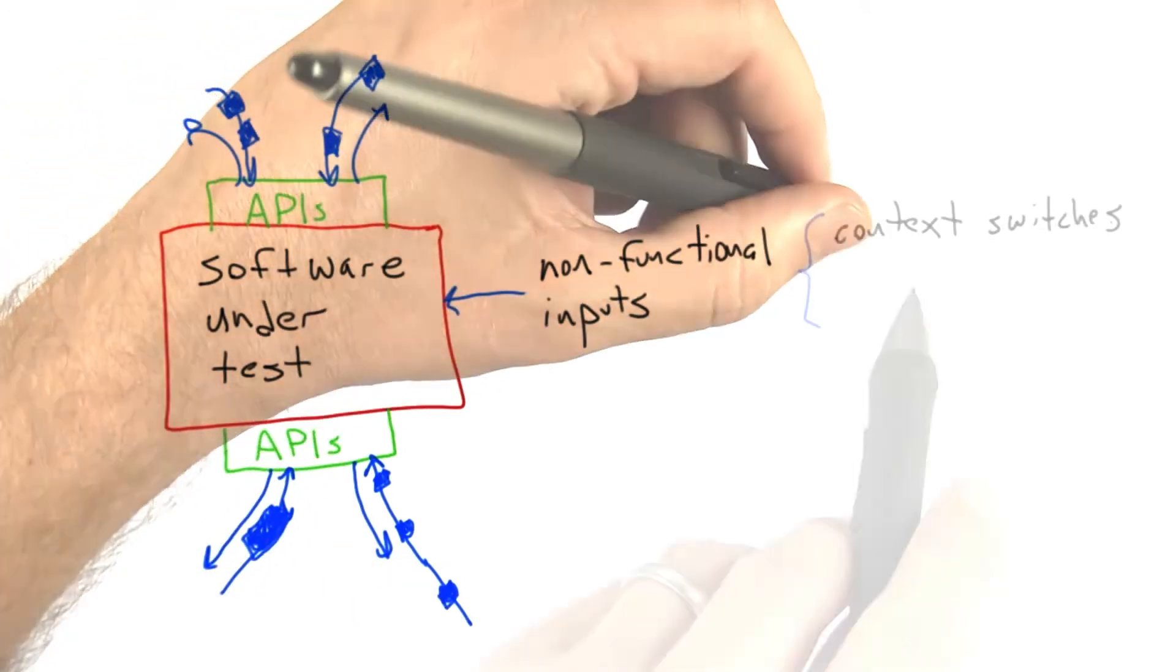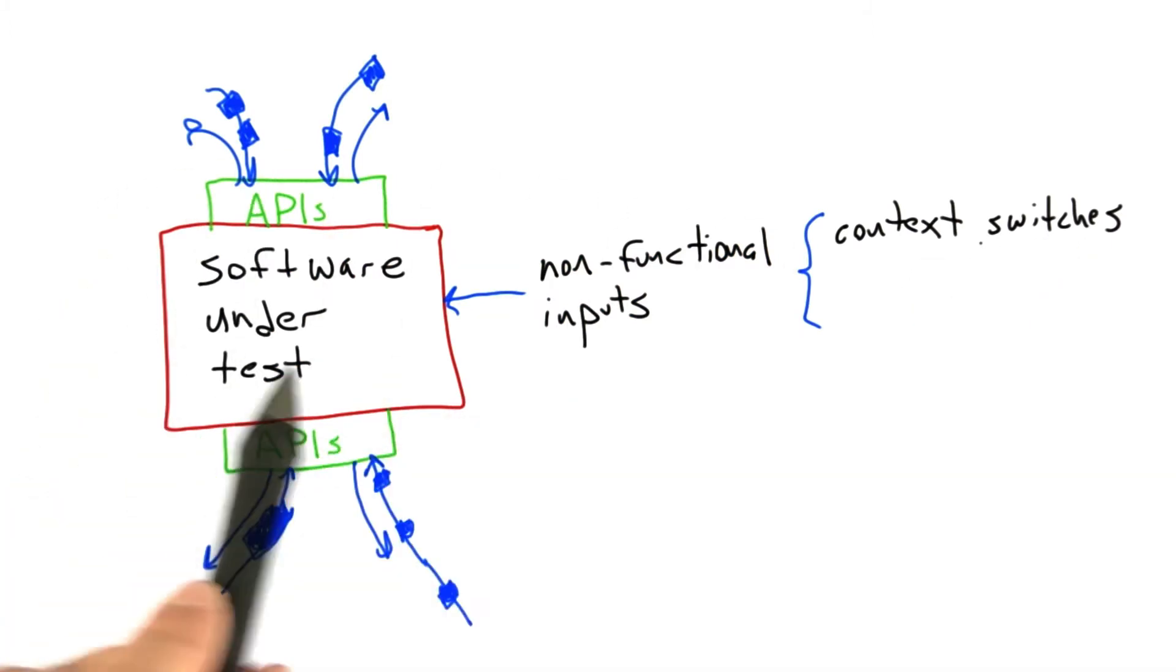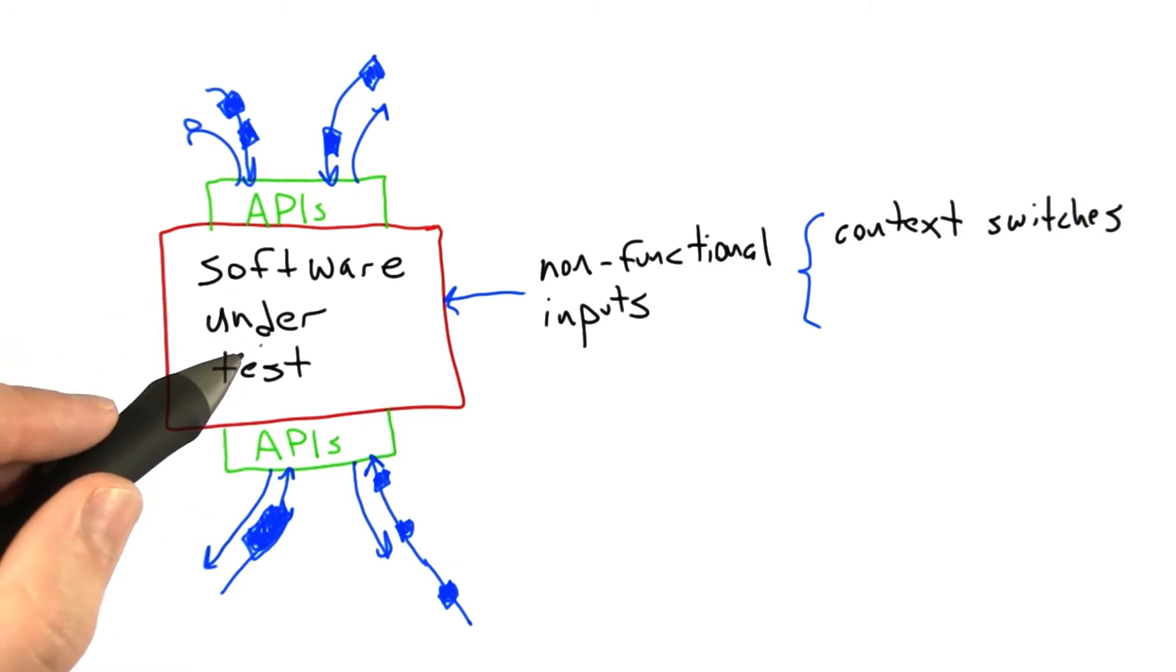Well, they include things like context switches. Context switches are switches between different threads of execution in multi-threaded software under test. Of course, you shouldn't have to worry about context switches at all if your software under test only has a single thread.